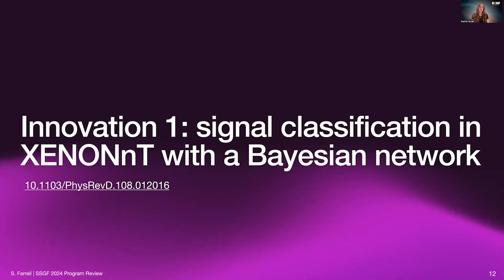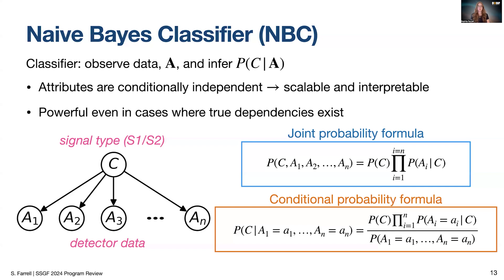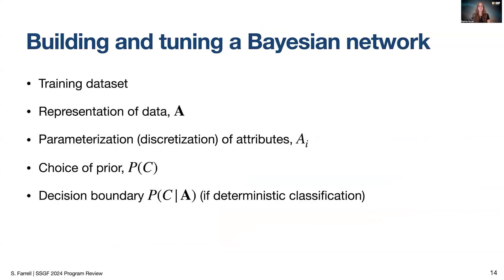I'll describe now the Bayesian network model that I developed and quantify its improved classification performance. Specifically, we'll observe the performance of what is known as a naive Bayes classifier. This is a highly powerful graphical model that uses Bayesian statistics to tackle a high-dimensional problem in a scalable way. Our objective was to use this model to classify the type of signal, whether scintillation or ionization sourced, according to the high-dimensional detector data. The Bayesian networks have many tunable features. We used a combination of experimental and simulated signals as our training data, looking at the low energy region of interest for this analysis.